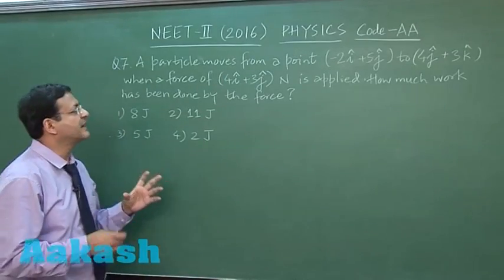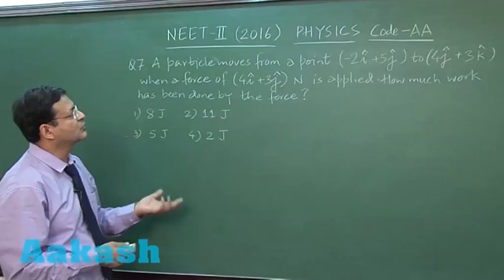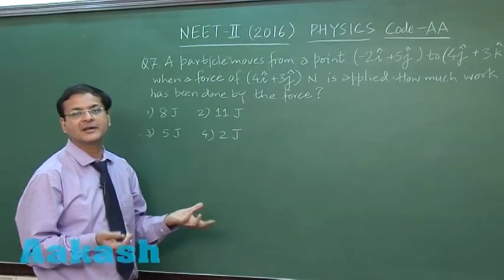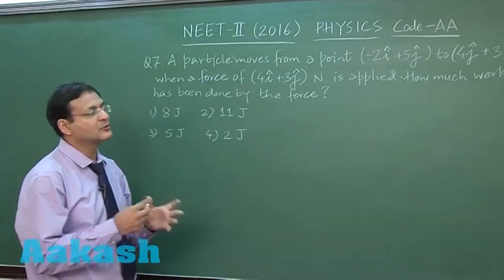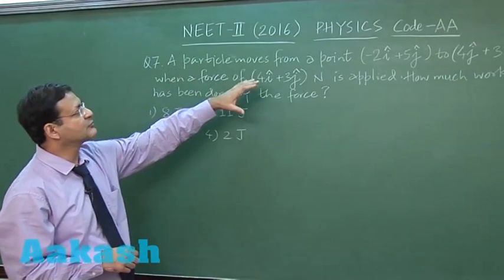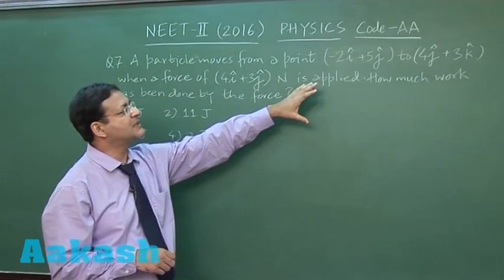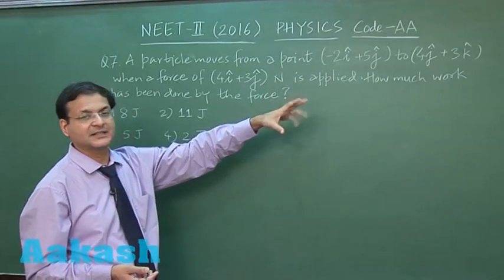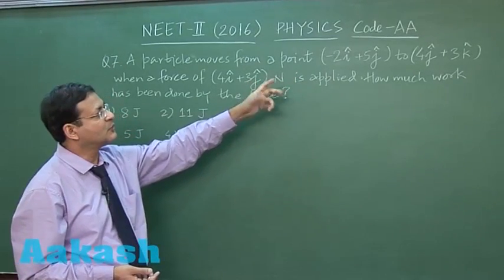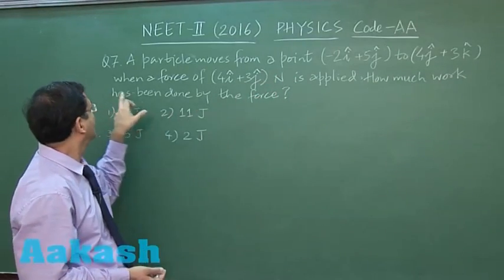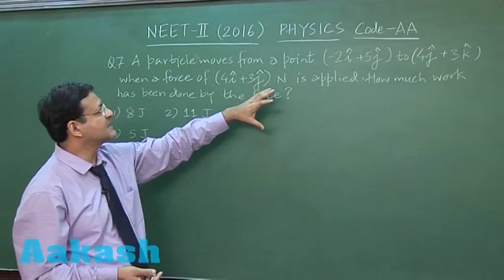Now, this question is based on the concept of work done due to a constant force. You have been given displacement, you have been given force, you have to calculate the dot product and work will be calculated. This is the question: A particle moves from a point (-2i + 5j) to (4j + 3k). Mind you, here i and j is there, and there j and k is there. When a force (4i + 3j) newton is applied.